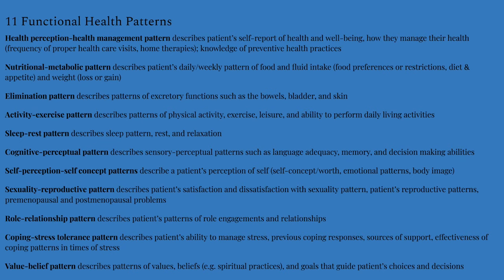Four: activity exercise pattern — describes patterns of physical activity, exercise, leisure, and the patient's ability to perform daily living activities. Five: sleep rest pattern — describes sleep patterns, rest, and relaxation. Six: cognitive perceptual patterns — describe sensory perceptual patterns such as language adequacy, memory, and decision-making abilities. Seven: self-perception and self-concept patterns — describe a patient's concept of self, self-worth, emotional patterns, and body image perception. Eight: sexuality reproductive patterns — describe satisfaction and dissatisfaction with sexuality, reproductive patterns, and premenopausal and postmenopausal problems.